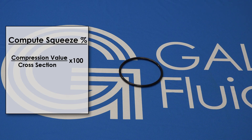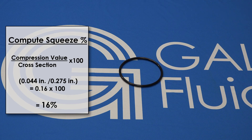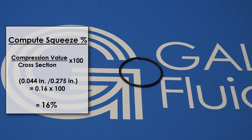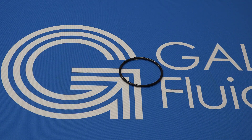Using the numbers from the previous step: if the o-ring's compression value is 0.044 inches and its cross section is 0.275 inches, divide 0.044 by 0.275. The result is 0.16. Multiply that by 100 to determine the o-ring squeeze is 16 percent.